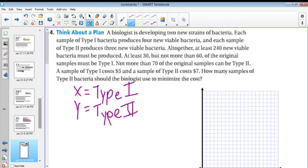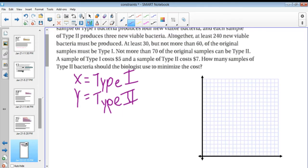And really I need to figure out what all of my equations are going to be. So we are told that each type of Type 1 bacteria produces 4 new viable bacteria, and each sample of Type 2 is 3 viable. And they want at least 240. So that means that I'm going to have 4x + 3y, and that has to be greater than or equal to 240, because together they have to produce at least 240 bacteria.